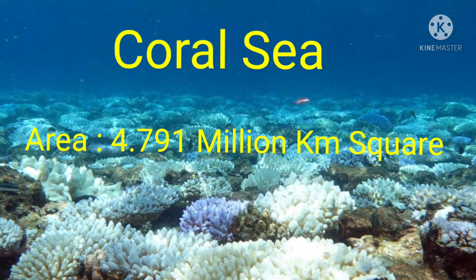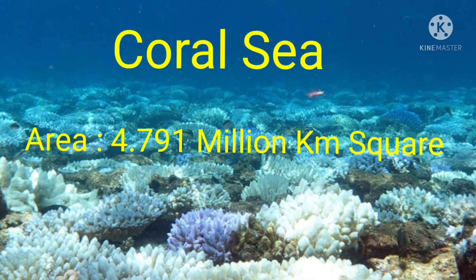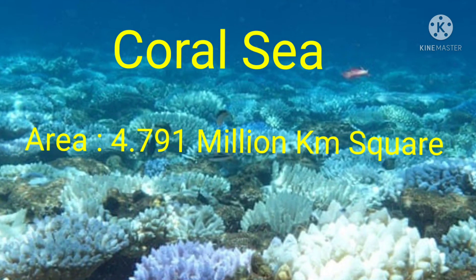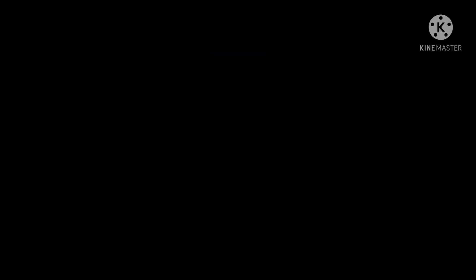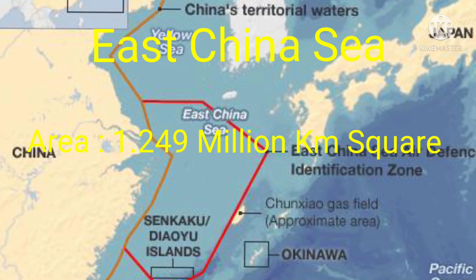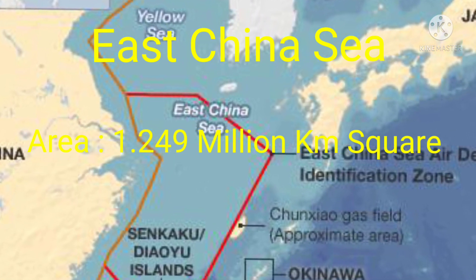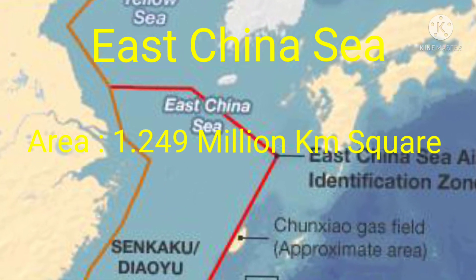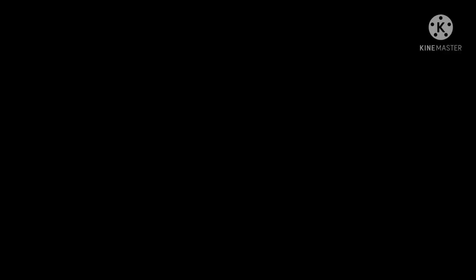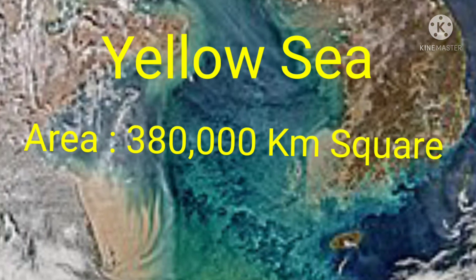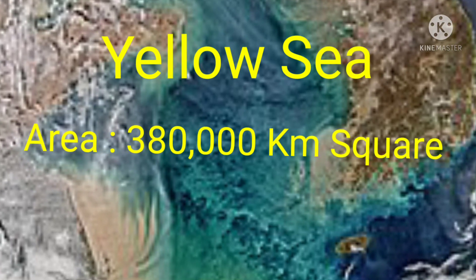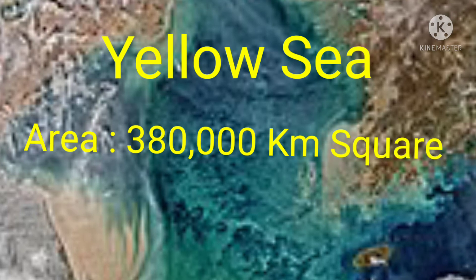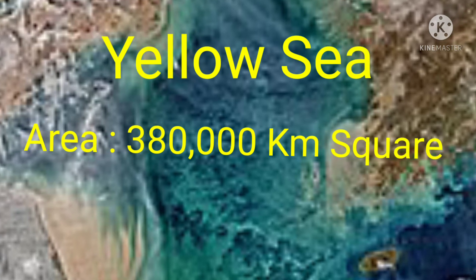Coral Sea — the area of the Coral Sea is 4.791 million km². East China Sea — the area of the East China Sea is 1.249 million km². Yellow Sea — the area of the Yellow Sea is 380,000 km².